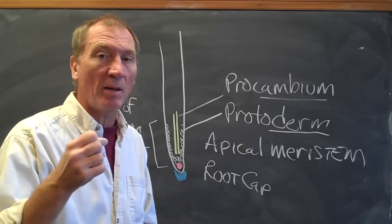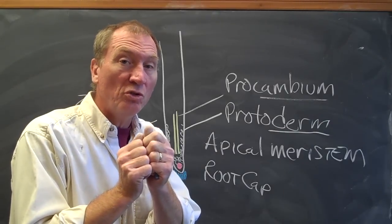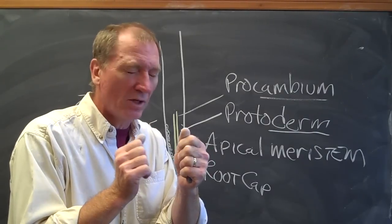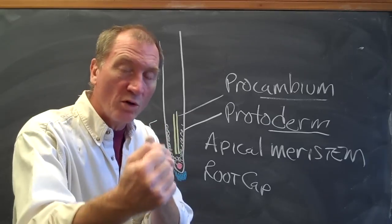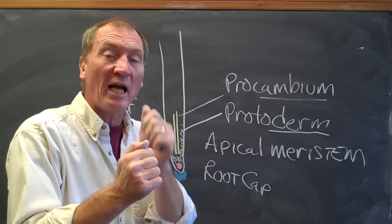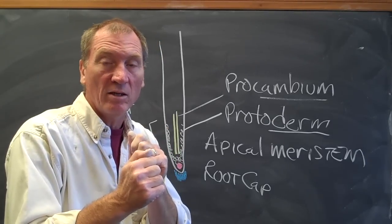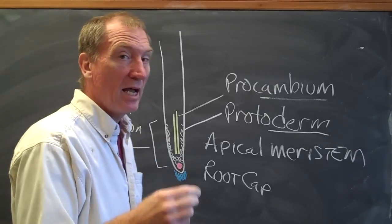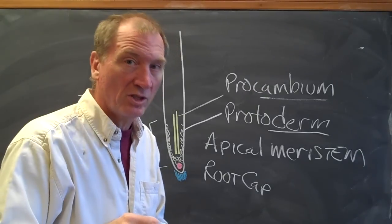But a third type of vascular tissue besides the xylem which carries water and the phloem which carries sugars is the cambium. And the cambium is a meristematic tissue that produces new phloem toward the outside of the plant and new xylem toward the inside of the plant. So cambium is a meristematic tissue and it's associated with vascular tissue.